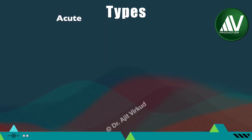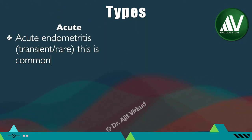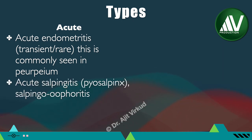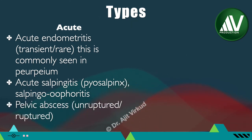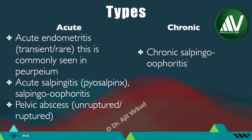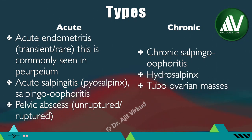Pelvic inflammatory disease is of two types. Acute PID involves acute endometritis, which is transient and commonly seen in the puerperium, acute salpingitis, pyosalpinx or salpingo-oophoritis, and pelvic abscess which may be unruptured or ruptured. Chronic PID is a sequelae of acute PID, and its pathology includes chronic salpingo-oophoritis, hydrosalpinx, tubo-ovarian masses, and rarely frozen pelvis.